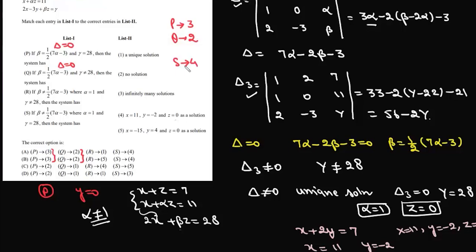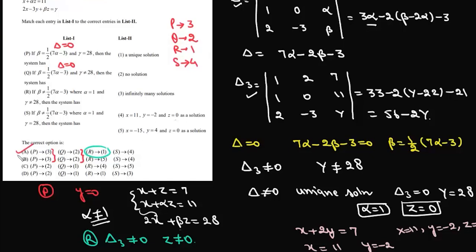For option r, since delta 3 equals zero, z is equal to zero. The only case here is delta not equal to zero and z equal to zero, giving a unique solution. So r matches with 1. The final answer is option A.